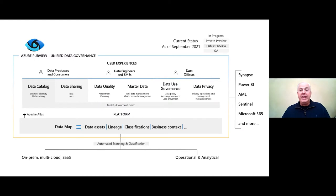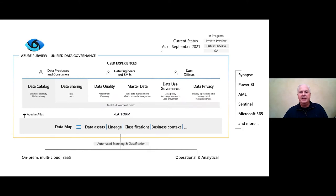In terms of where we are on our journey: the data map and data catalog are going GA imminently. There's an event next week with major announcements around the Purview system. Data sharing is available today in GA as a standalone, and we'll be moving in Q4 to bring data sharing inside the Purview and Synapse experiences. Also in Q4, we'll start the base of data quality, initially focused inside the Azure stack, then extending to other Microsoft, on-premises, and cross-cloud systems.